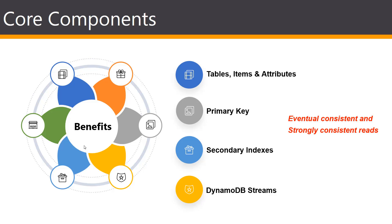Some of the core concepts of DynamoDB are tables, items, and attributes. Tables are similar to other database systems — DynamoDB stores data in tables, which is basically a collection of data. Each table contains zero or more items, which is a group of attributes that is uniquely identifiable among all other items. Each item is comprised of one or more attributes, which is a fundamental data element that does not need to be broken down any further.